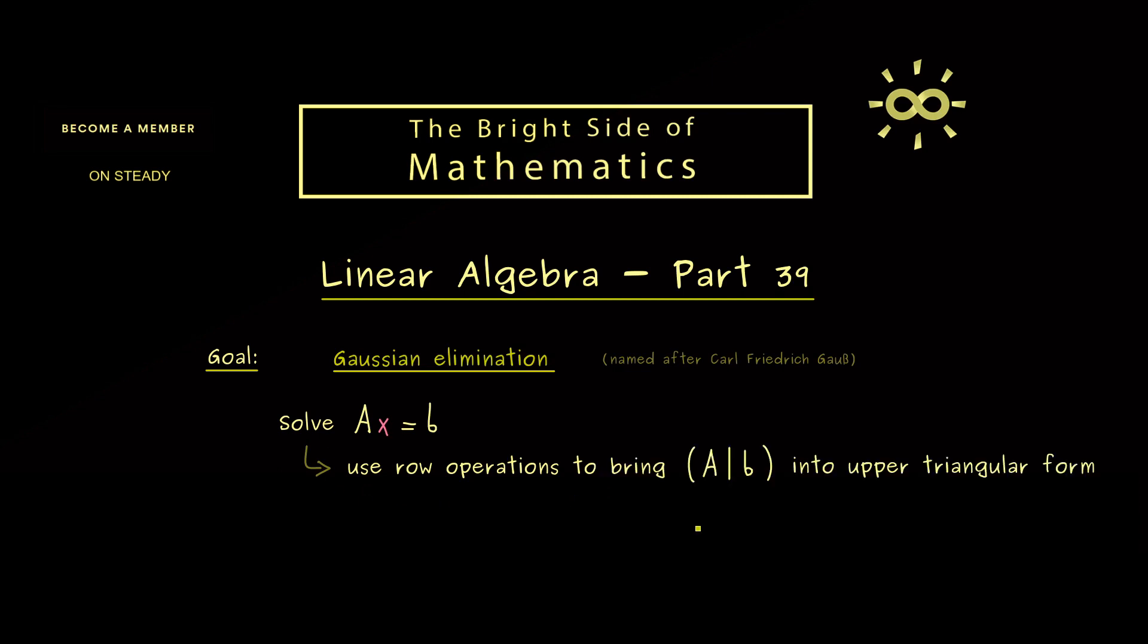So please recall what we want to use are row operations. More precisely, we want to apply these row operations to the augmented matrix (A|b) and we want to transform it into a nicer form. For example, into an upper triangular form. In fact, this idea we have already discussed in the former video and maybe let's look at an example now.